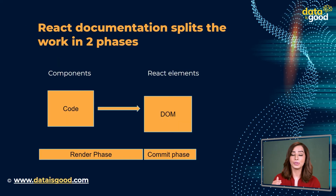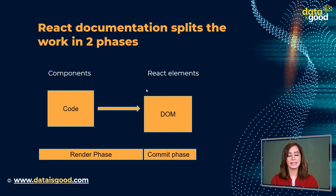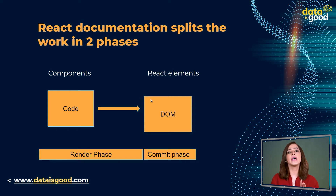Let's understand how rendering works in React. When we run a React application, the code returned in components gets translated into elements — elements that get mounted on the DOM. React documentation splits this work into two phases. Have a look at your screen: there are two phases — the render phase and the commit phase.